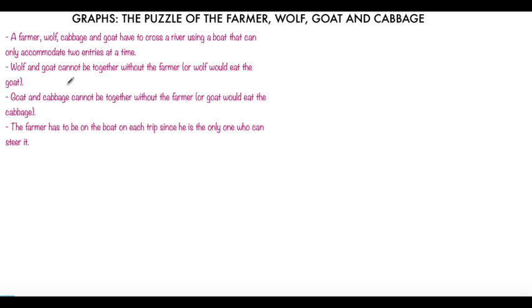What we have to do is make the farmer, wolf, cabbage, and goat cross a river using a boat which can only accommodate two at a time maximum. Wolf and goat cannot be together without the farmer or wolf would eat the goat. Similarly, goat and cabbage cannot be together without the farmer or goat will eat the cabbage. The farmer has to be on every trip because the farmer is the only one who knows how to steer the boat.